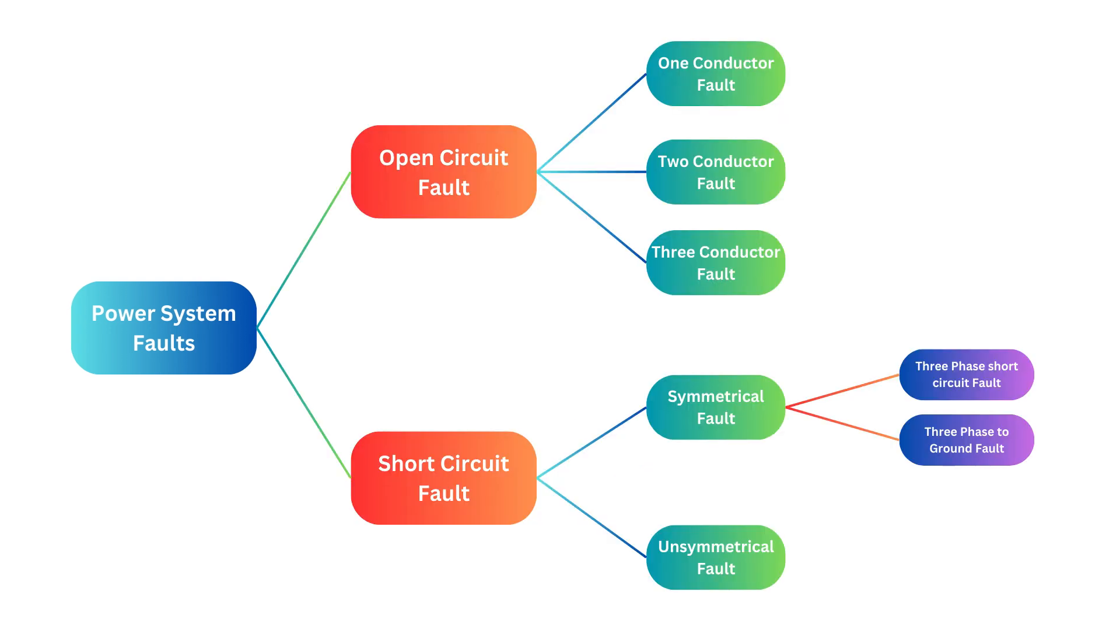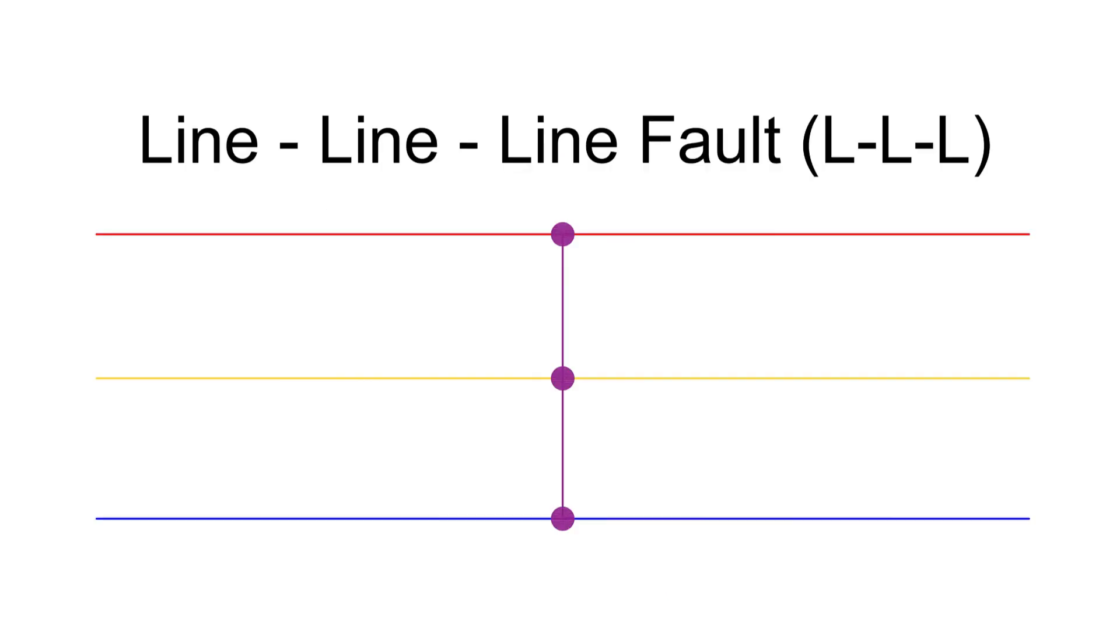Symmetrical faults involve all three phases equally, meaning the system remains balanced even after the fault occurs. These faults are subcategorized into line-to-line-to-line fault. This is a rare but severe fault that produces the highest fault current, used for determining circuit breaker ratings.